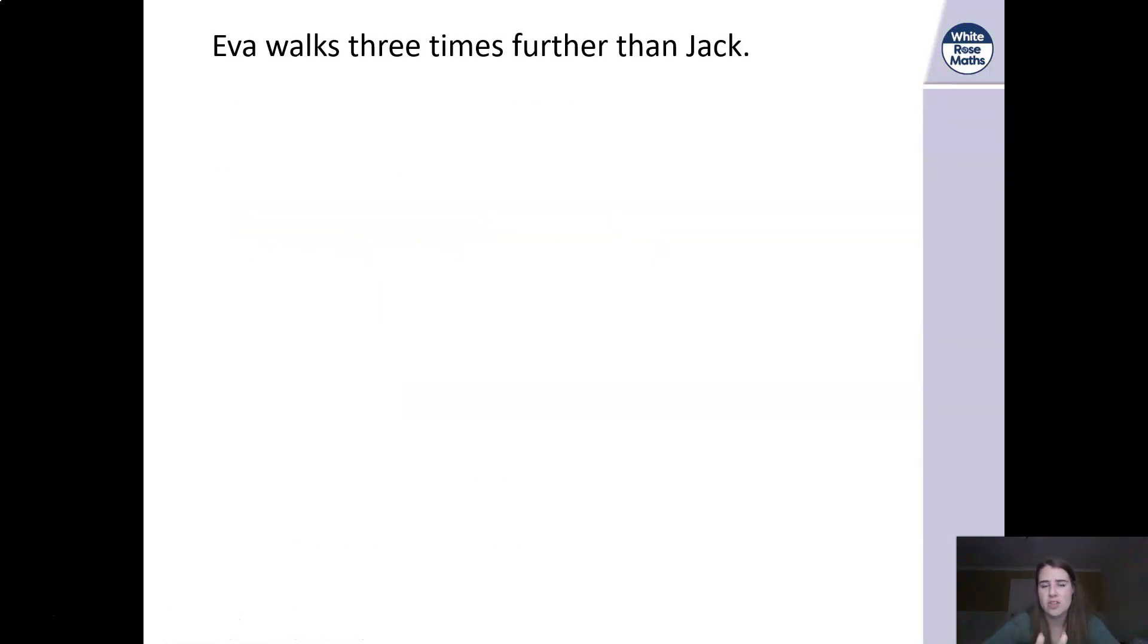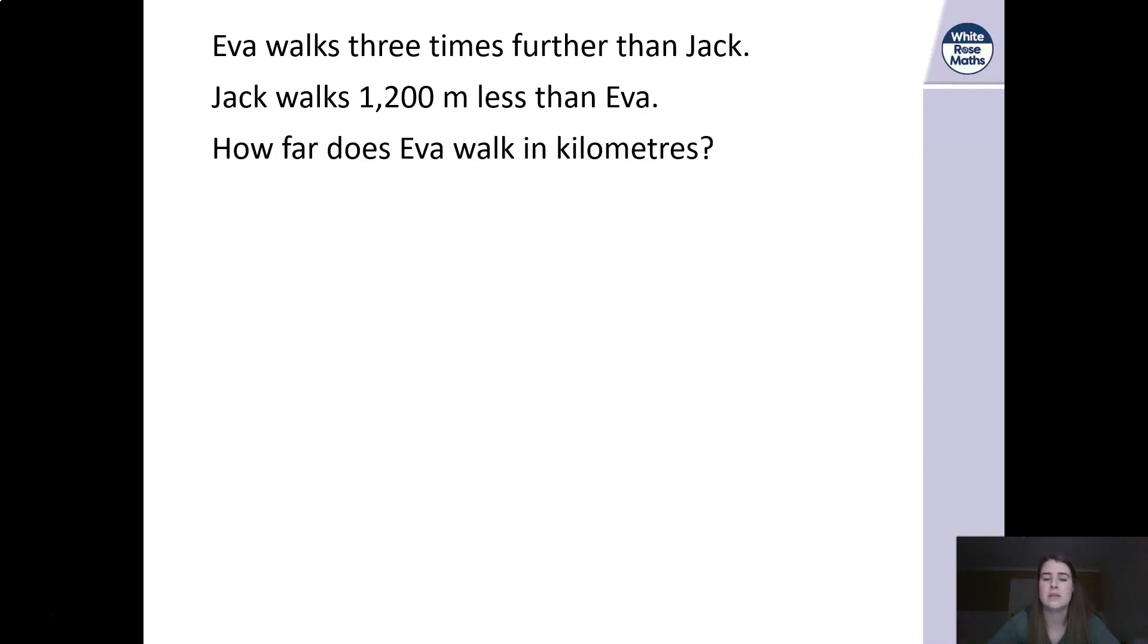So now that I've shown you that, let's do it backwards. See if you can do it backwards. Eva walks three times further than Jack which we already know. Jack walks 1,200 meters less than Eva. We need to work out how far Eva's going to walk in kilometers. Now I'm going to go back to my bar. I know that Eva walks three times the amount, so Eva needs the three boxes. Jack's only going to have the one box because it's got to be three times more than what Jack walks.